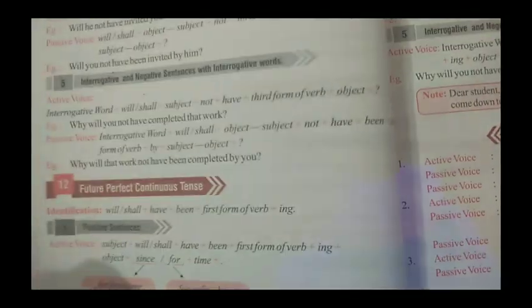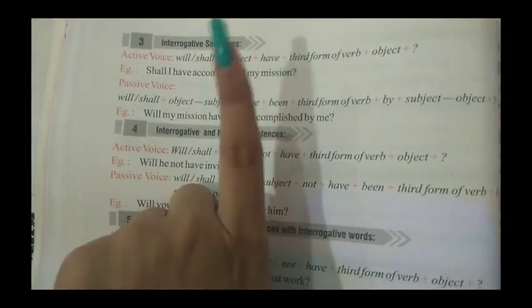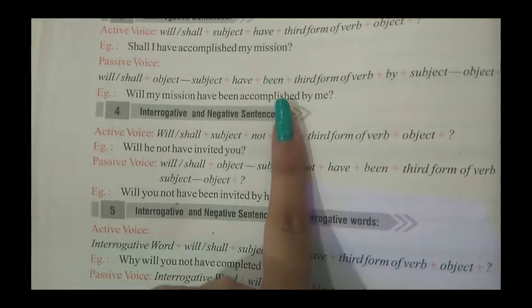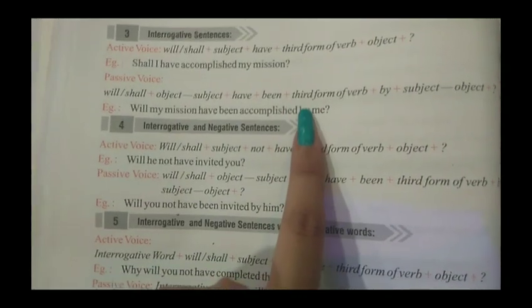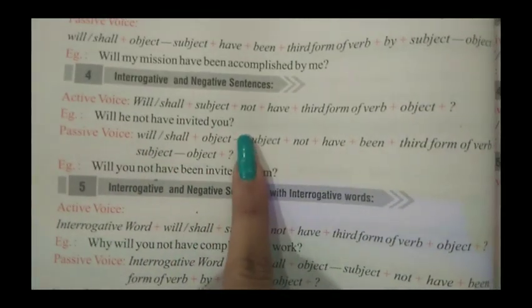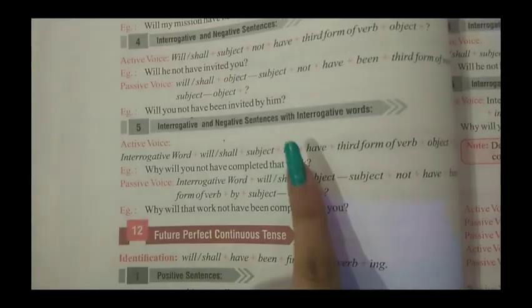Now come to the next page for interrogative. In interrogative we use will/shall before the subject, and we form a question mark. We usually use 'shall' first. In passive voice the question form remains the same. For interrogative negative, we add 'not'. For example: 'Will he not have invited you?' and 'Will you not have been invited by him?'